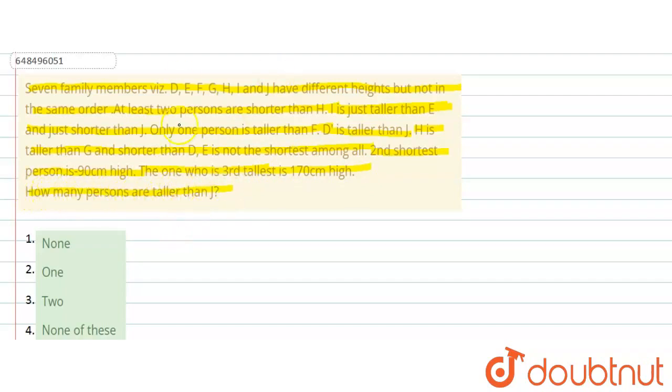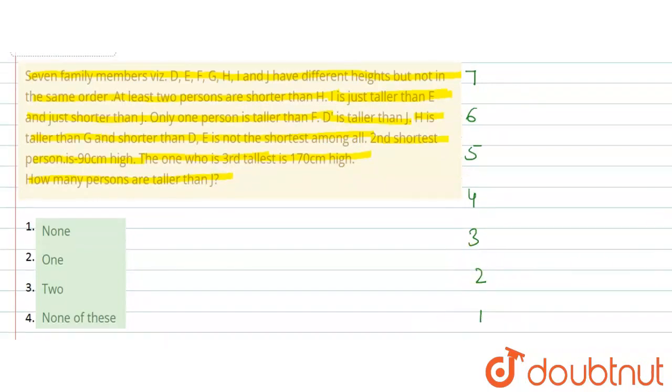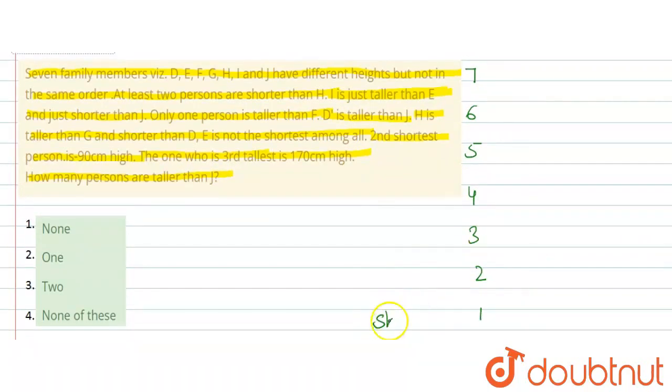So first of all, there are 7 persons, so here 7 position mark kar le. 7, 6, 5, 4, 3, 2, and 1. So here the bottom, that person will be shorter, so the 7th place per that will be taller.